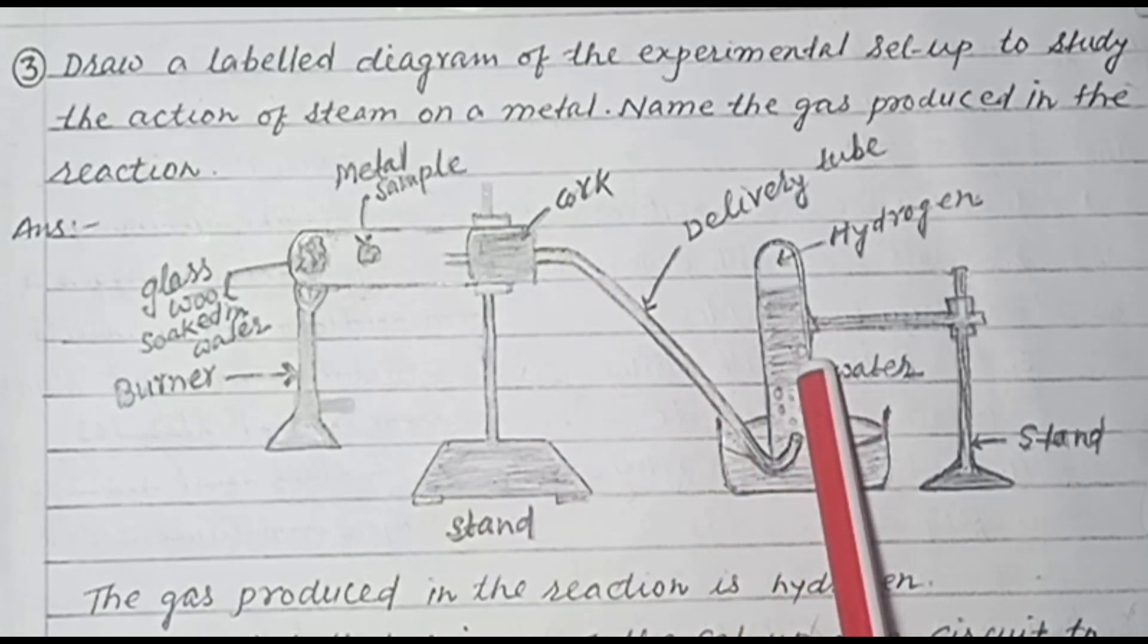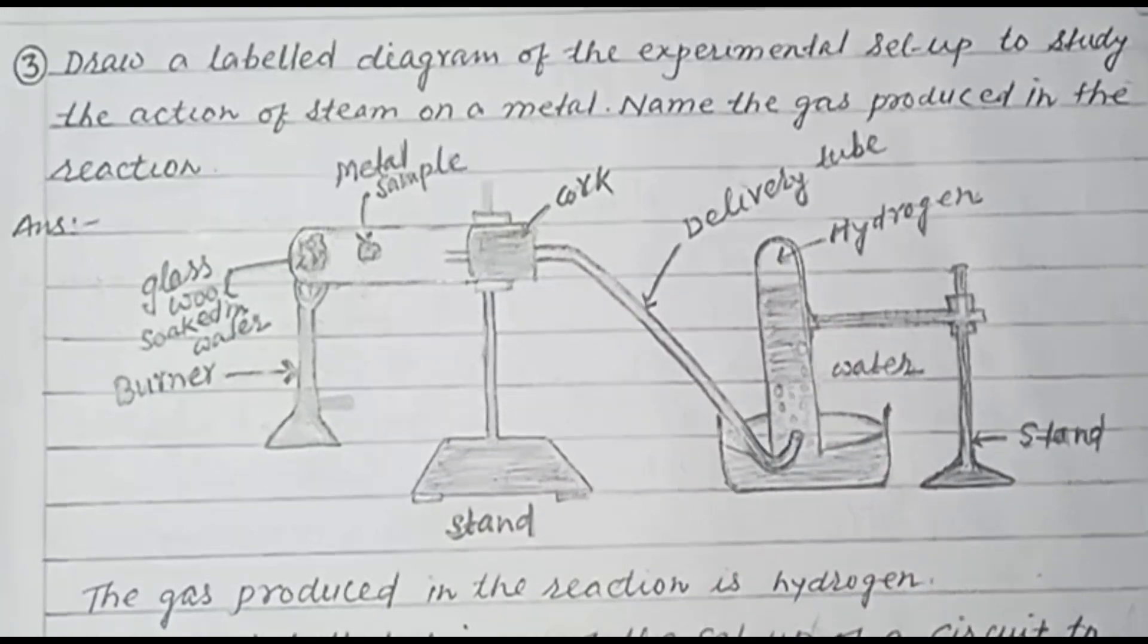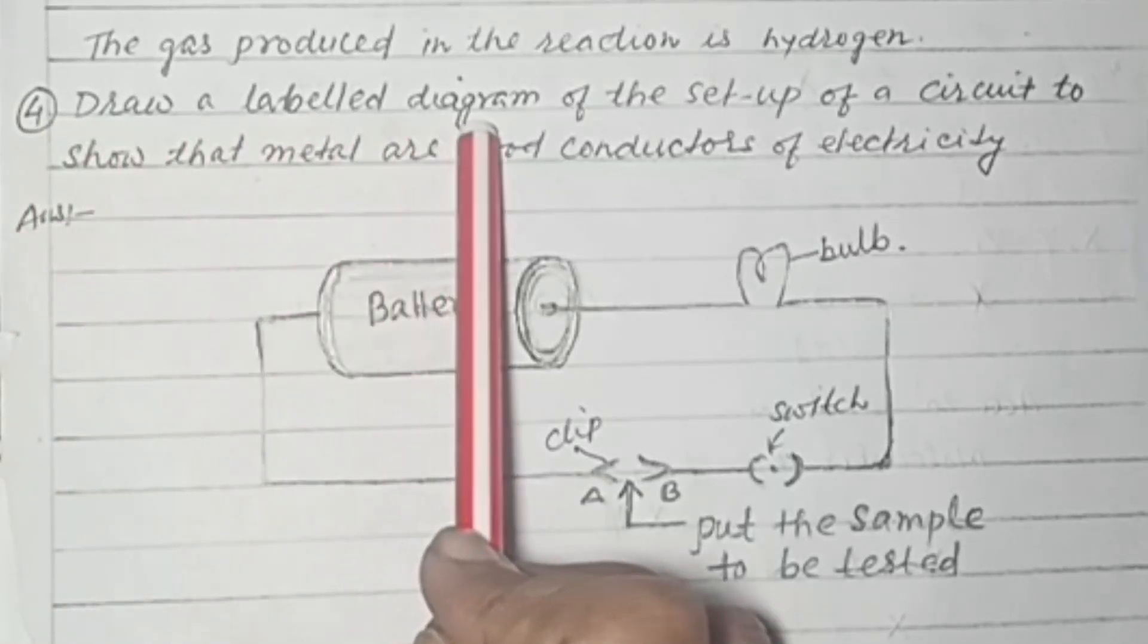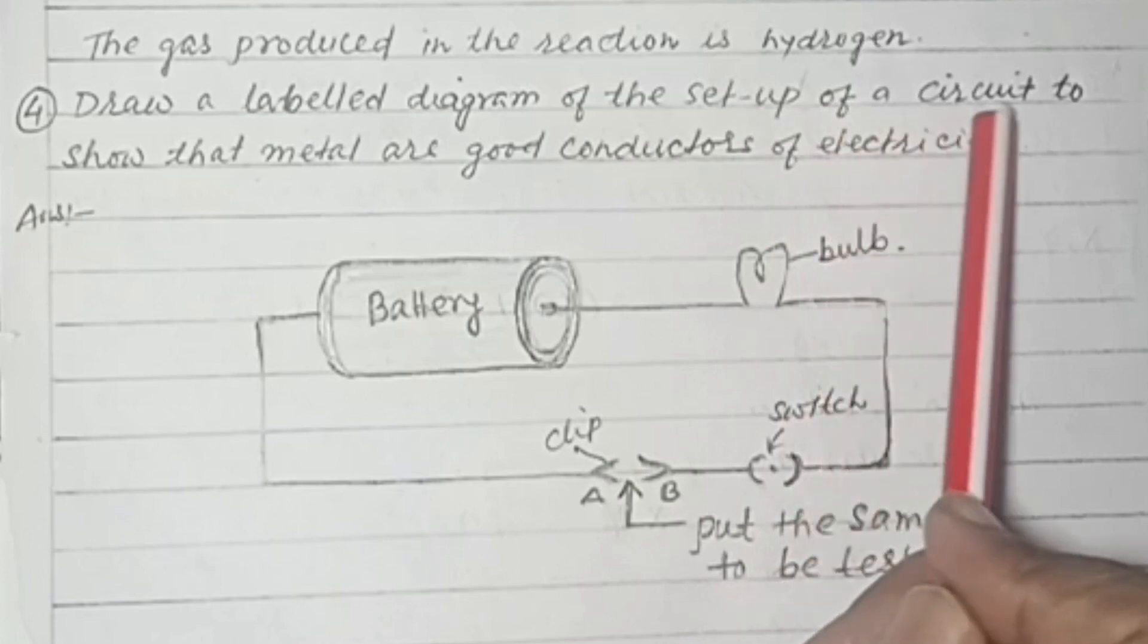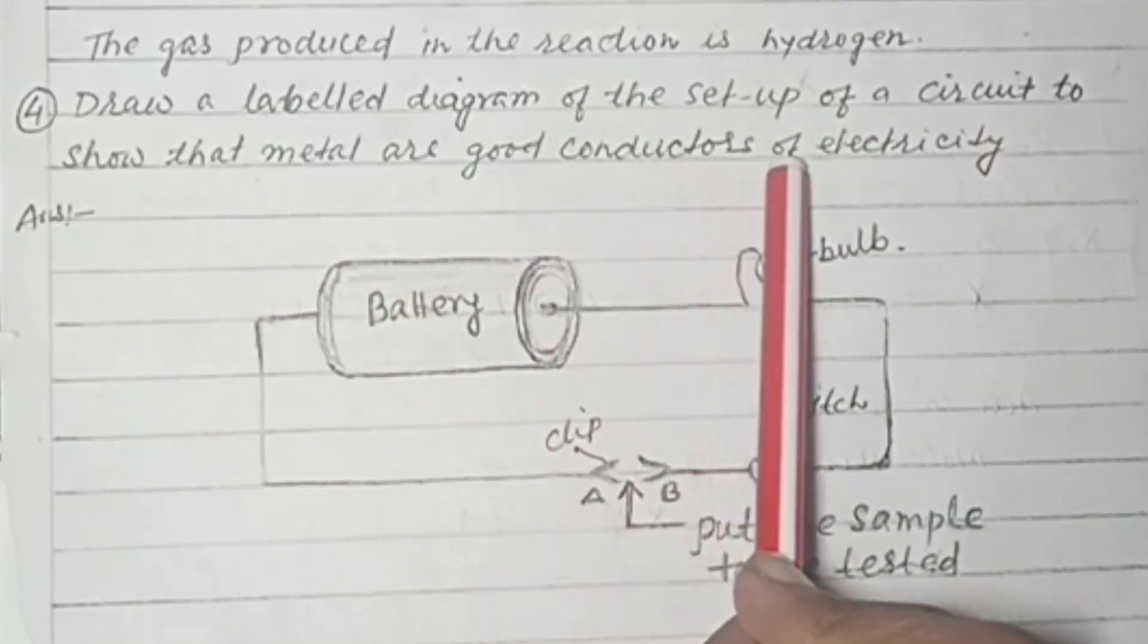This is because hydrogen is insoluble in water and lighter than water. Question number four: Draw a labelled diagram of the setup of a circuit to show that metals are good conductors of electricity.